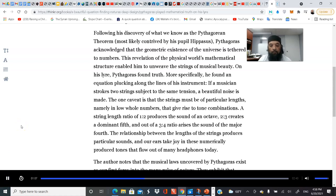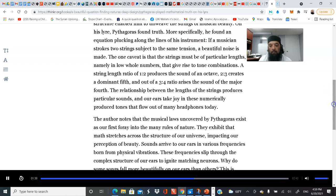On his lyre, Pythagoras found truth. More specifically, he found an equation. Plucking along the lines of his instrument, if a musician strokes two strings subject to the same tension, a beautiful noise is made. The caveat is that the strings must be of particular lengths in low, whole numbers. A string length ratio of one to two produces the sound of an octave, two to three creates a dominant fifth. Now remember, the universe is doing tasbih, the whole universe is singing.